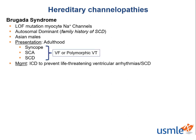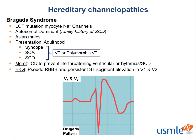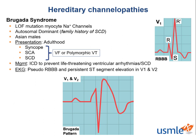Brugada syndrome is characterized by a very classic EKG pattern of a pseudo-right bundle branch block with ST segment elevations in V1 and V2. Recall the classic RSR-prime pattern seen in lead V1 during a typical right bundle branch block. This rabbit ears or M-shaped pattern is also observed in Brugada syndrome, hence why it's called a pseudo-right bundle branch block. Note the accompanying elevated ST segment, which slopes down into an inverted T wave.